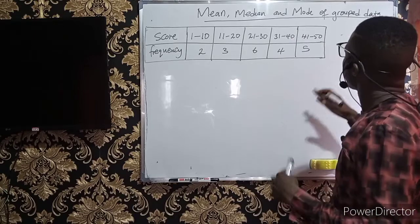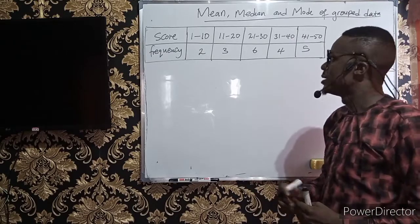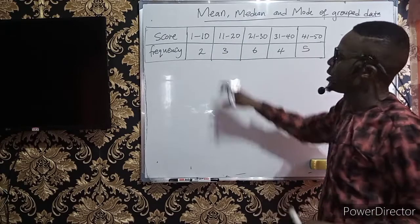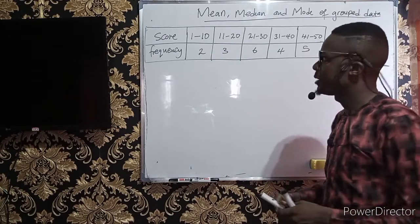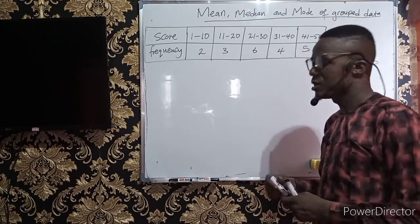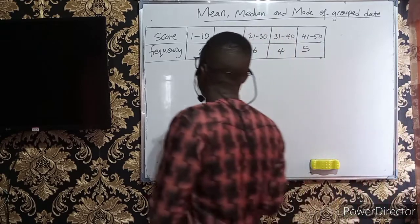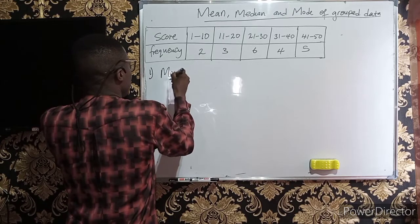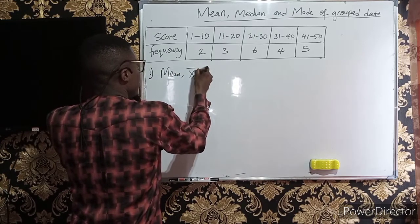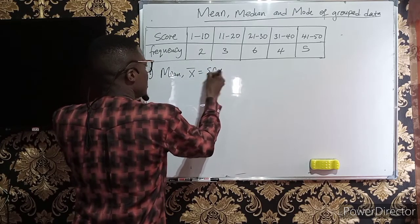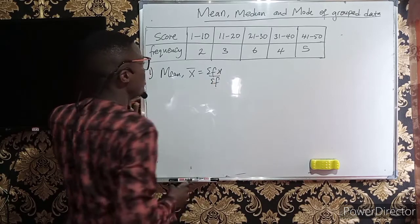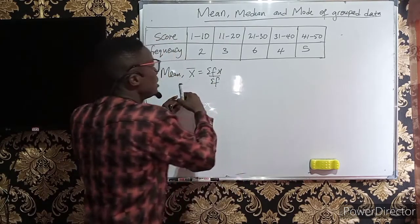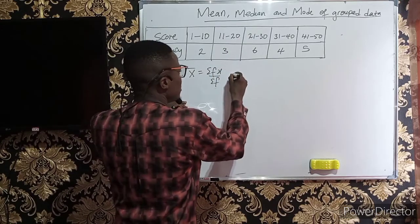In the previous videos on statistics, we dealt with the mean, median, and mode of ungrouped data. But in this case, you can see that the data are grouped with their corresponding frequencies, and we are required to get the mean, median, and mode. The mean, x-bar, is summation fx over summation f when the frequency is given. Let us make a table to compute the mean before we get to median and mode.